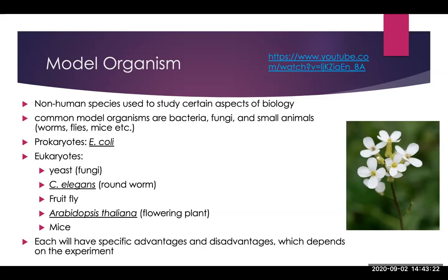There are lots of model organisms. A few examples include E. coli, which is a bacteria. Eukaryotic cells include fungi — yeast is used a lot. Yeast are single cells but are eukaryotic, so they have more complexity than a bacterial cell and are more similar to human cells. C. elegans are even more similar to humans, as they are a type of roundworm. Fruit flies are similar. A flowering plant, Arabidopsis, is also a common model used — though we don't usually use plants when trying to learn about human diseases, but it represents other plants.